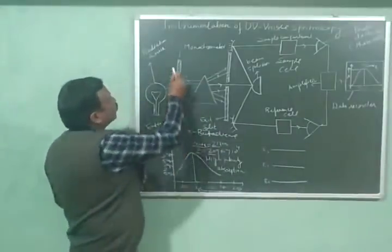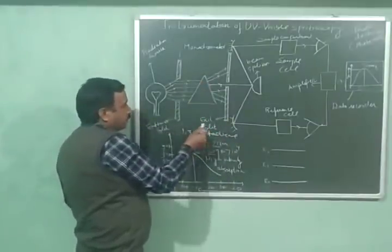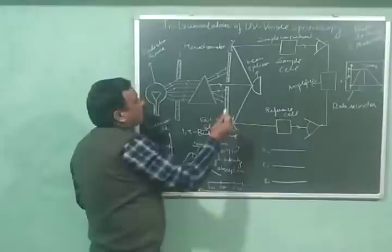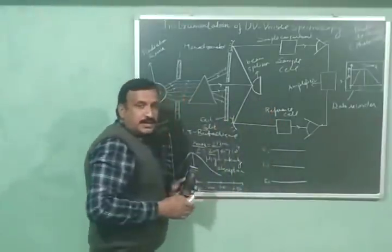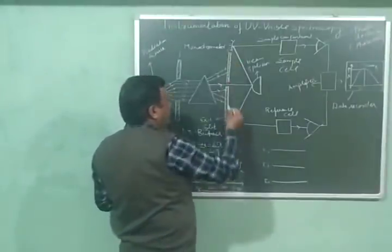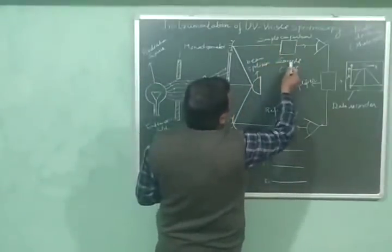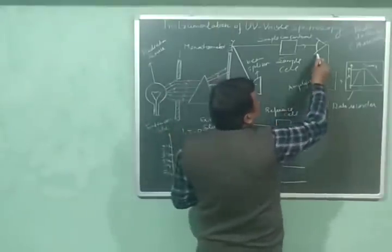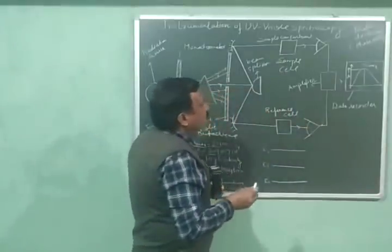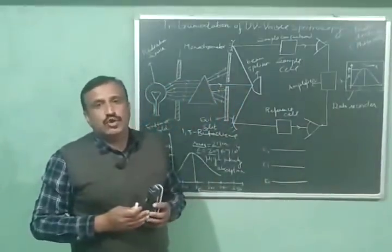The most commonly used spectrophotometers consist of a radiation source, a monochromator having two slits — an entrance slit and an exit slit — with a prism in between, a beam splitter which splits the radiation into two beams of equal intensity, mirrors to reflect the radiation, a sample compartment with a sample cell and reference cell, photo detectors with photo cells, an amplifier, and finally a data recorder.